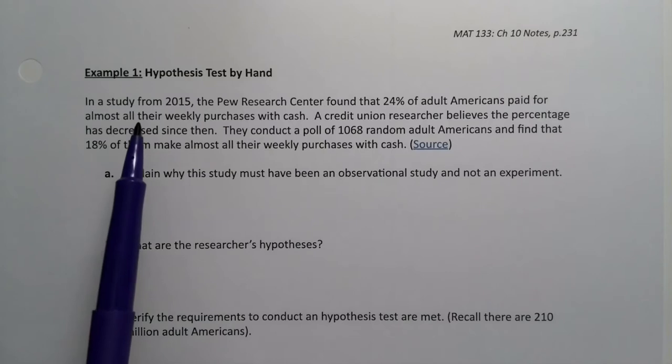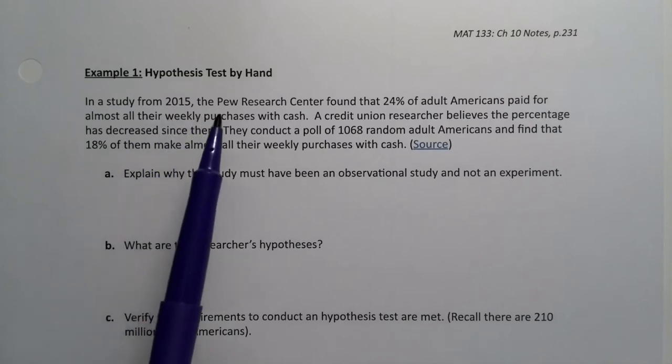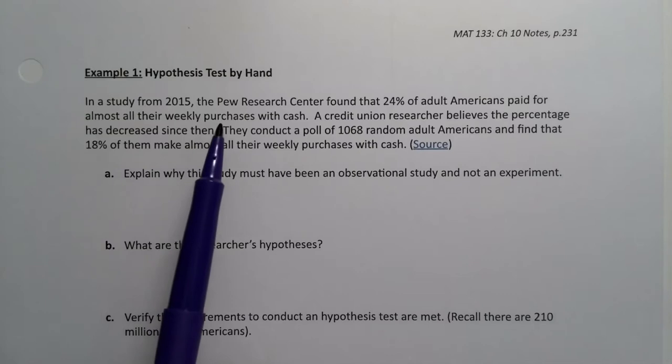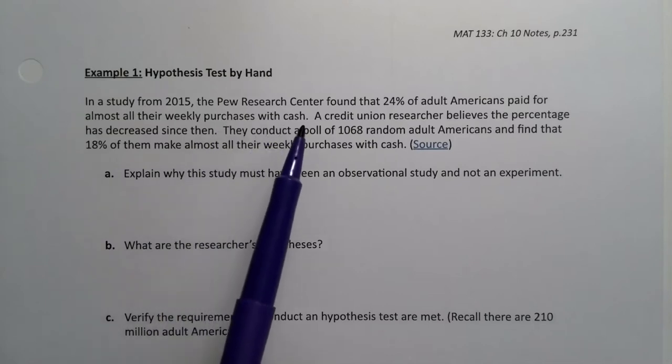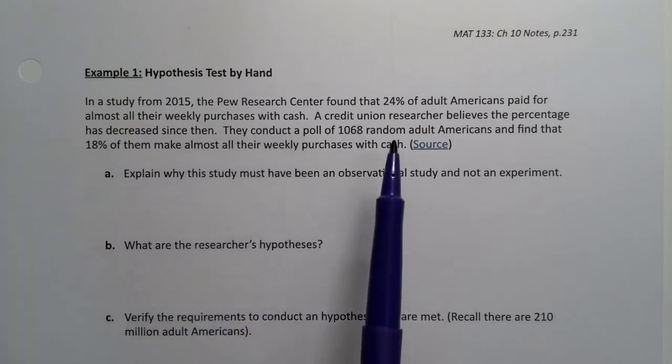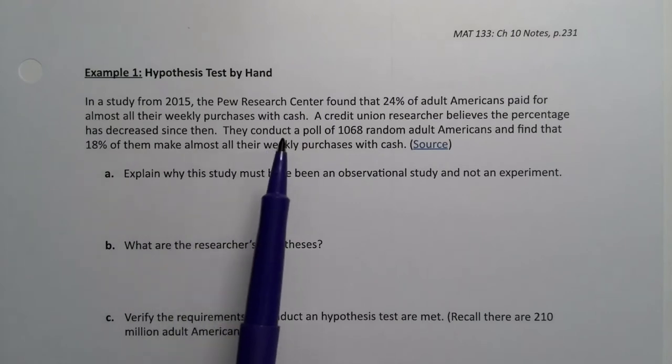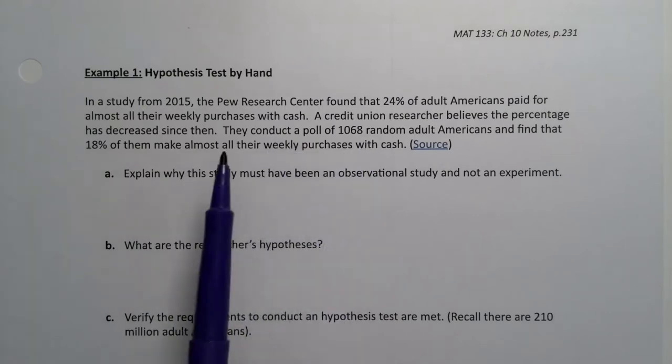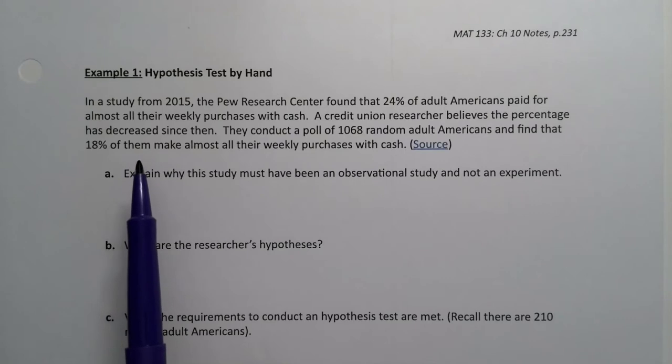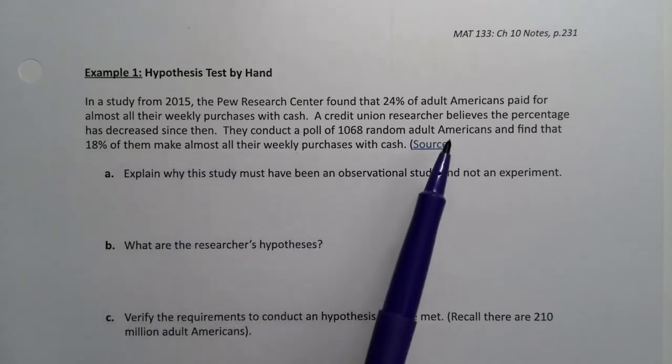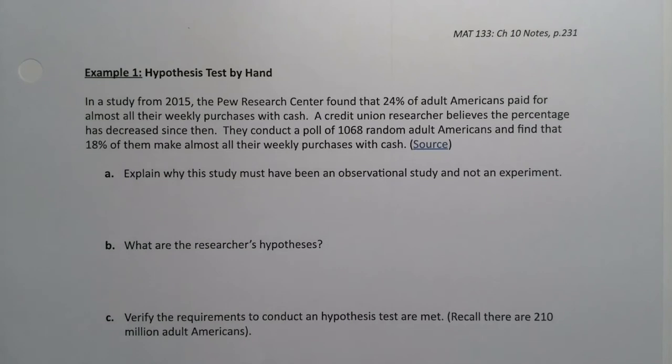So in a study from 2015, the Pew Research Center found that 24% of adult Americans paid for all their weekly purchases with cash, for almost all their weekly purchases with cash. A credit union researcher believes the percentage has decreased since then. They conduct a poll of 1,068 random adult Americans and find that 18% of them make almost all their weekly purchases with cash. And yes, this is a real survey in case you're interested.